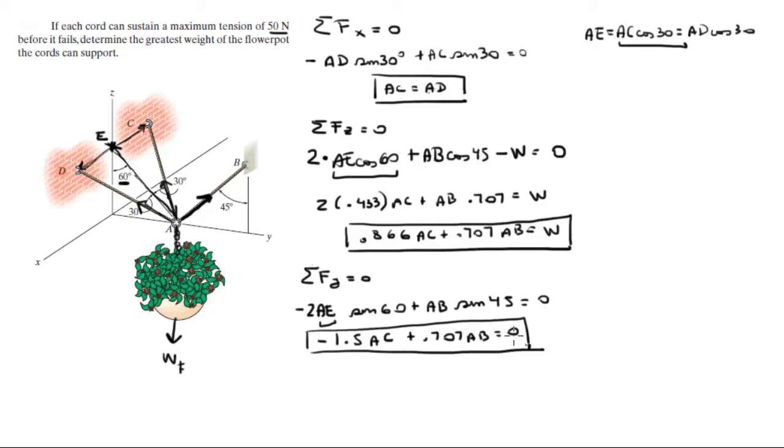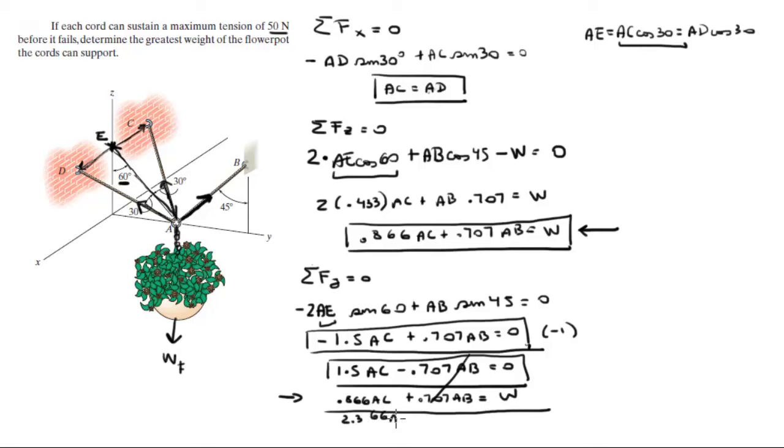So basically what I'm going to do now is multiply this by negative one. And you're going to get that 1.5 AC minus 0.707 AB is equal to zero. And I'm going to rewrite this equation. I'm going to rewrite it just at the bottom of this. And you're going to get that 0.866 AC plus 0.707 AB is equal to W. So when you add these two equations together, you see that these two cancel out.